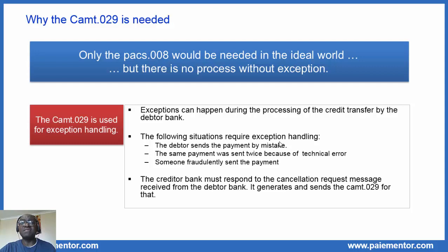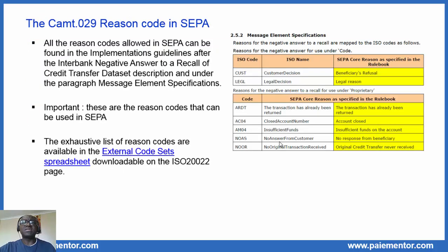In the CAM-29, the creditor bank provides the reason why the cancellation request is rejected. This brings us to the next topic: the CAM-29 reason codes. In the SEPA implementation guidelines, you find all the reason codes that are allowed in SEPA in the CAM-29 message.